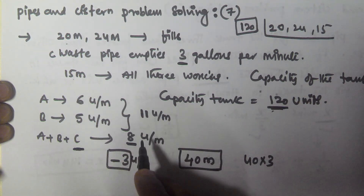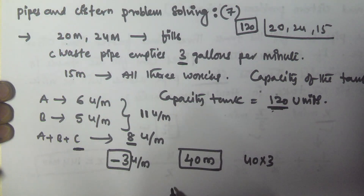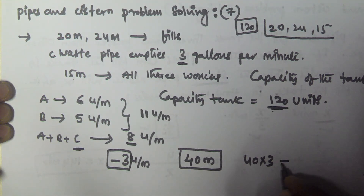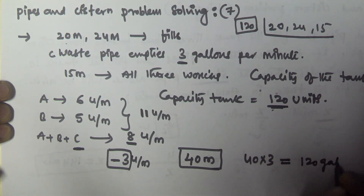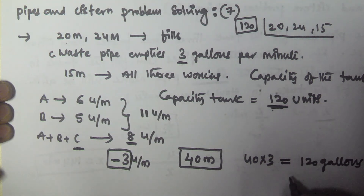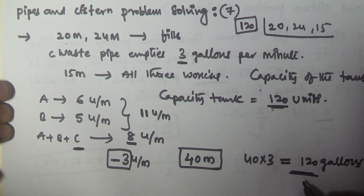Since pipe C empties 3 gallons per minute and takes 40 minutes to empty the whole tank, the actual capacity of the tank is 40 times 3, which equals 120 gallons. So the capacity of the tank is 120 gallons. I hope you got this — thank you very much for watching, please subscribe to my channel.